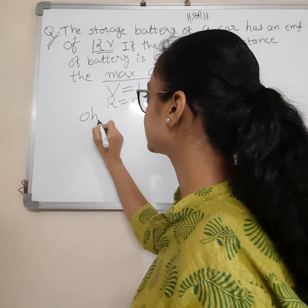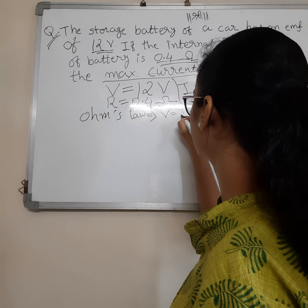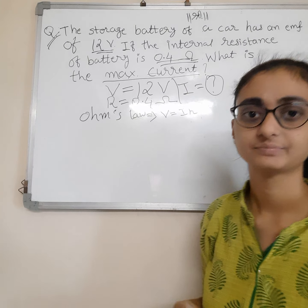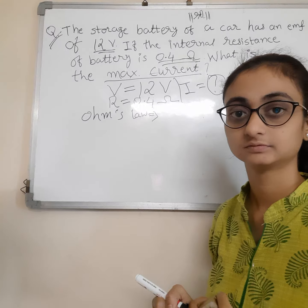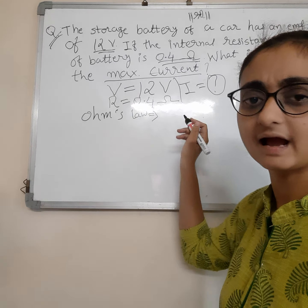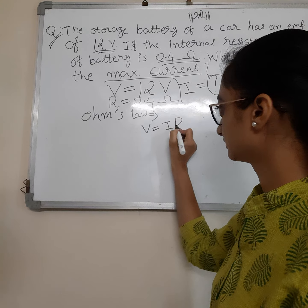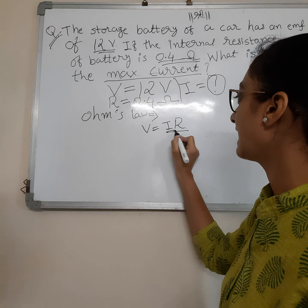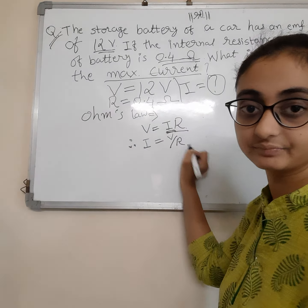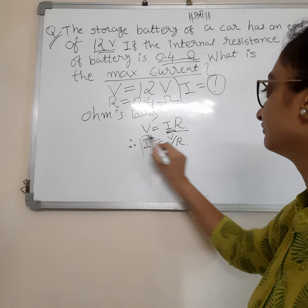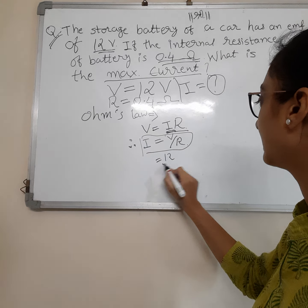Now we see an example of Ohm's law. Here is the question written on the board: A battery of a car has an EMF of 12 volts and the internal resistance of the battery is 0.4 ohms. We have to find the maximum current. We are given potential difference V equals 12 volts and resistance R equals 0.4 ohms, and we have to find current I.